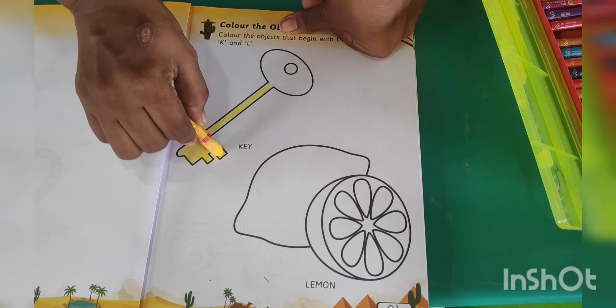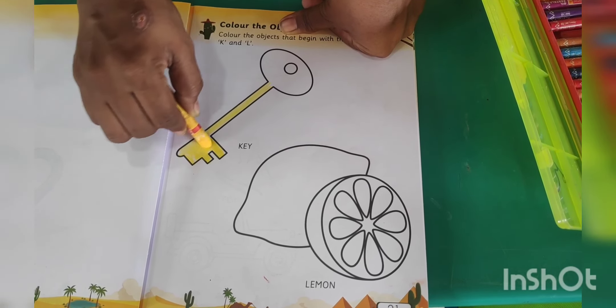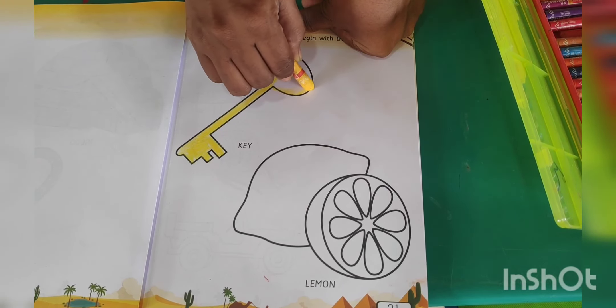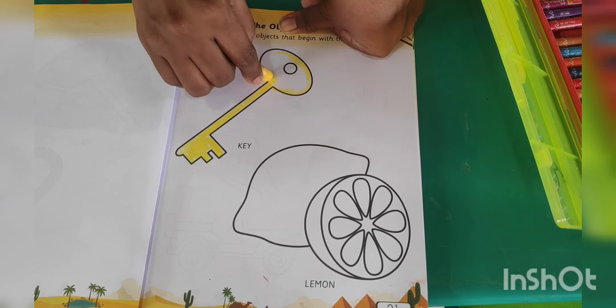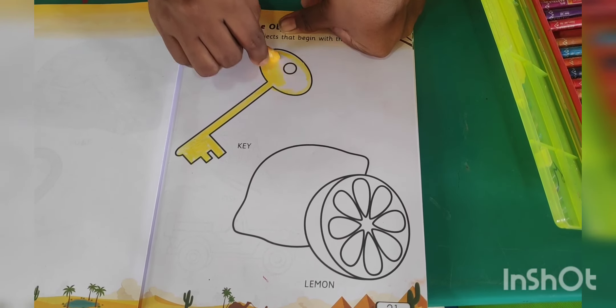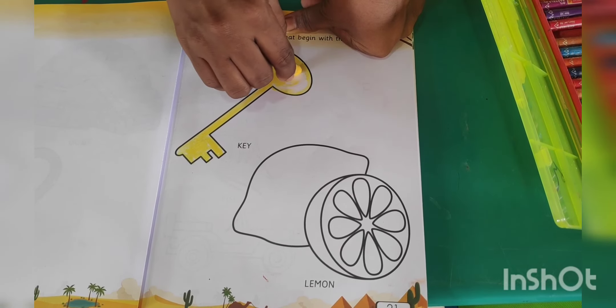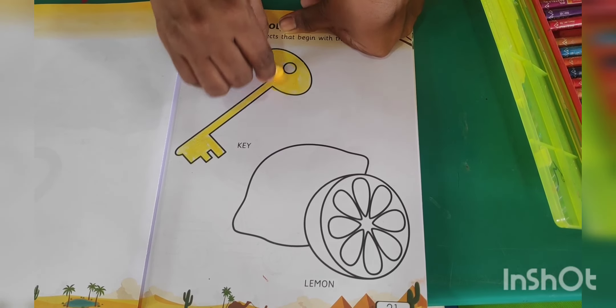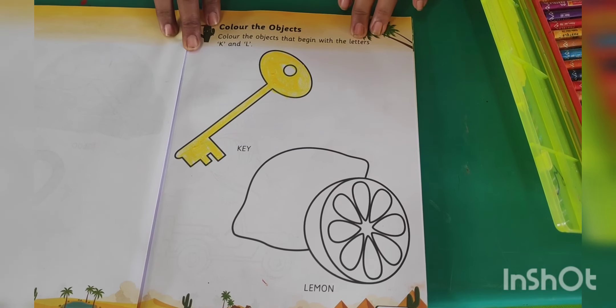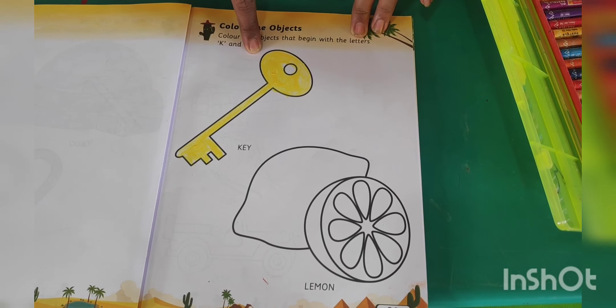Don't scribble here. K says kuh, K-E-Y, K for key. K says kuh and K for key. Okay, done. Like this, you also have to color this object. K says kuh and K for key.